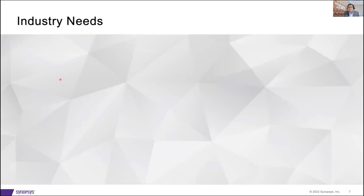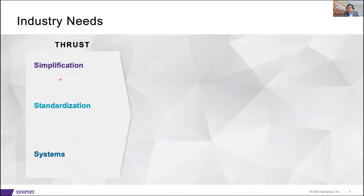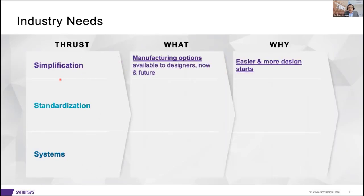What is it that I think we as an ecosystem or team should do together? This is my naive thought — it's probably not right, it's probably not wrong — but I'd like to use it as a starter for greater discussion. I really think that we should drive simplification, standardization, and systems for the field of heterogeneous integration. In particular, we need to make it very clear and simple what manufacturing options are available to designers — chip designers, system designers — today and in the future, because that enables easier and hence a greater number of design starts.